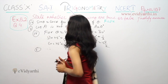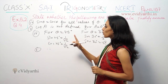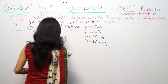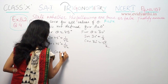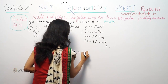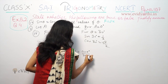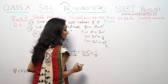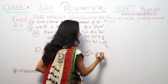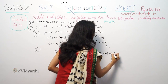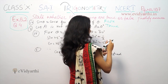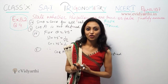Fifth part: cot A is not defined for A = 0°. Cot A is equal to cos A divided by sin A. So cot 0° equals cos 0° divided by sin 0°, which is 1 divided by 0. When 0 comes in the denominator, the value is not defined — it is infinite. So the value is not defined. That means this statement is true.